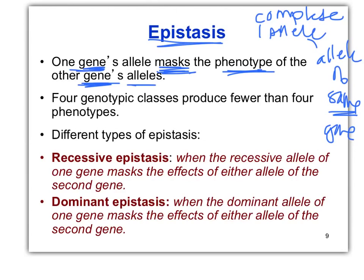That's what all these extensions at the end of this chapter are dealing with — genes affecting other genes, one gene's allele masking the phenotype of another gene.